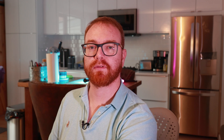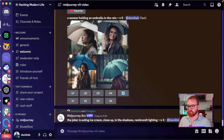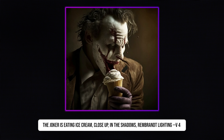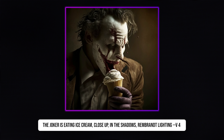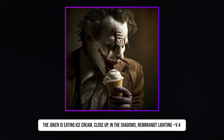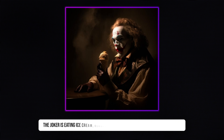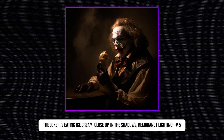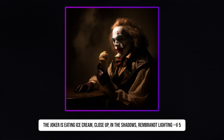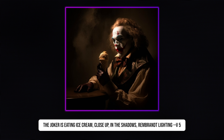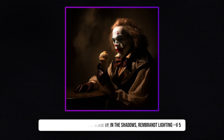Midjourney 5 images also have a much wider dynamic range — the difference between the dark and bright areas of an image. Comparing version 4 to version 5, version 4 has rather flat color where the background and shadows are similar in brightness. In version 5, the blacks are almost exactly black and the whites are very bright. It's pretty beautiful — I got chills just looking at that image.